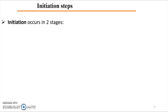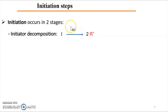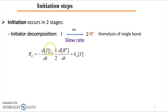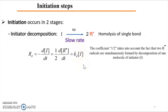Initiation occurs in two stages. The first one: we have initiator decomposition giving place to the formation of two radicals, with kd as the constant of decomposition. The rate of this decomposition is usually slow, so for the kinetics we consider this decomposition step as the limiting step of initiation. The rate of decomposition equals minus the disappearance of I and equals kd times the concentration of the initiator. The factor of one-half is due to the fact that each initiator gives place to the formation of two radicals by homolysis of single bonds.